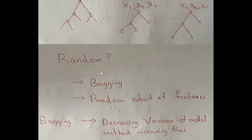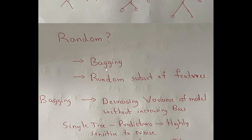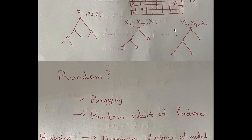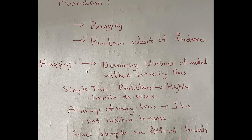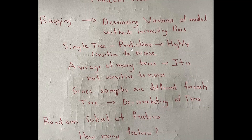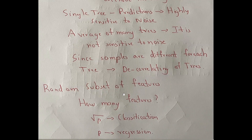So why is this called a random forest? It is because of two things: one is bagging, whereby you create random subsets of data, and the second is that you also do a random subset of features for the different decision trees. That is why this is a random forest of decision trees. When you do bagging, it decreases the variance of the model without increasing bias. A single tree's predictions are highly sensitive to noise, but averaging many trees reduces sensitivity to noise if the trees are not correlated. Bagging de-correlates the trees created on different bagged datasets, and additionally doing a random subset of features further de-correlates the trees.